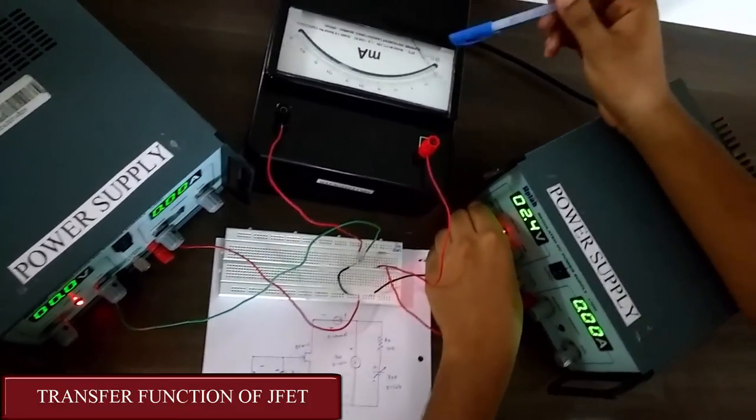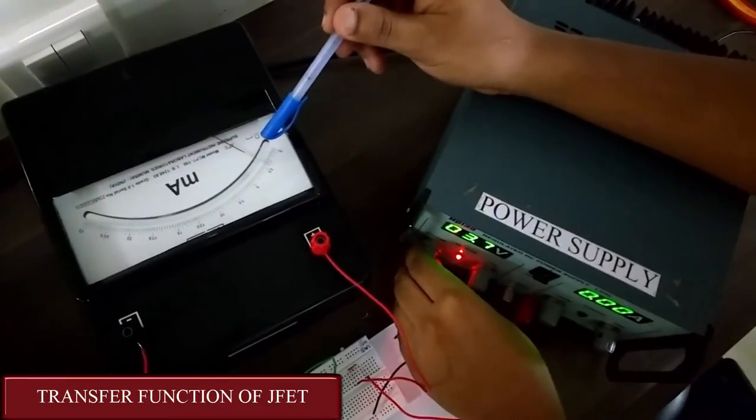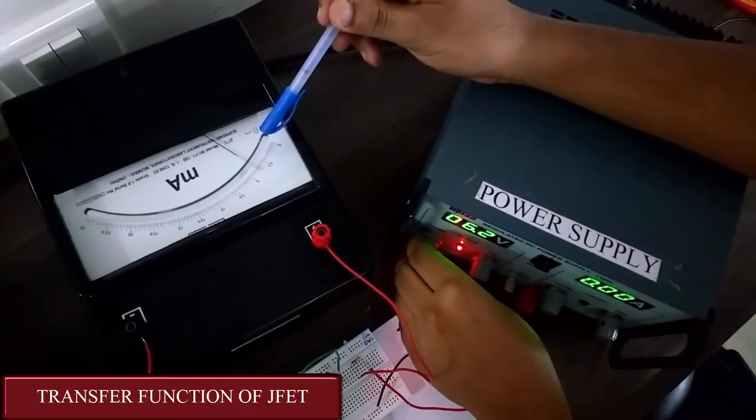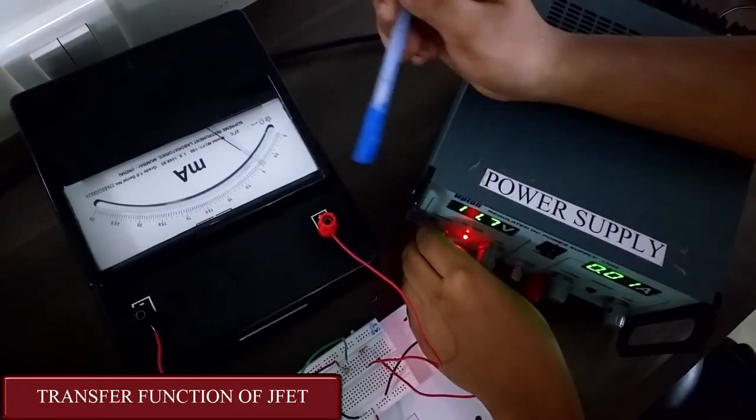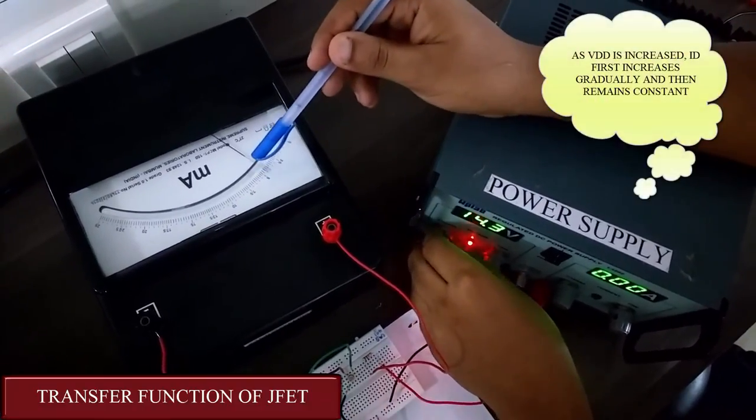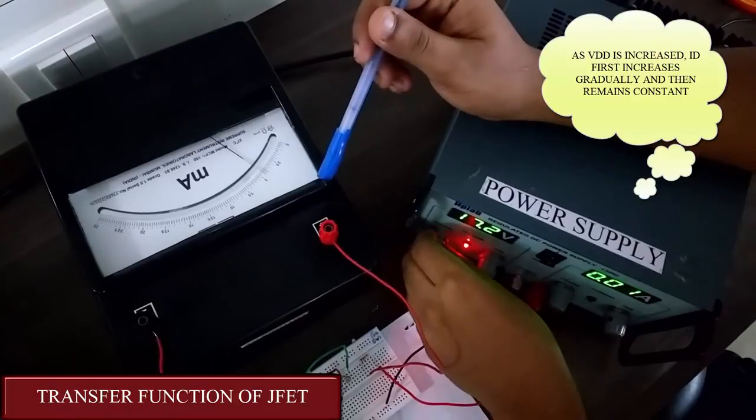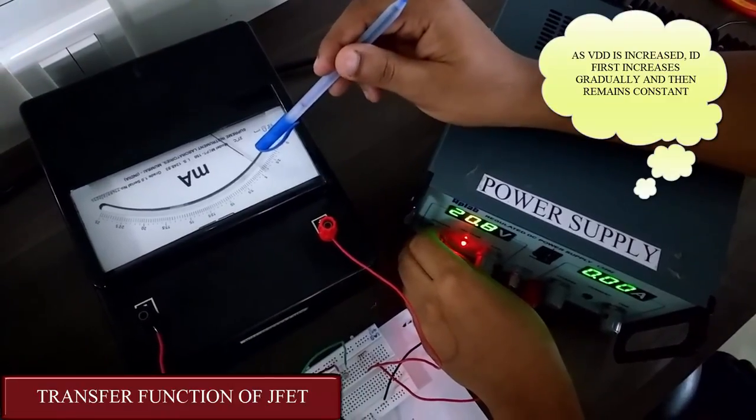Now since we are increasing VDD, the ID is also increasing. But we observe that at a certain point, at almost 10 volts, the ID becomes constant. Now since I am increasing VDD, ID is still constant.